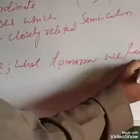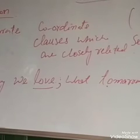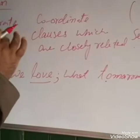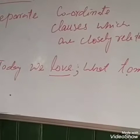Today we love and tomorrow we hate — we separate coordinate clauses like this. The second use is when there is a long coordinate clause — many coordinate clauses — without a conjunction, and we use a semicolon.